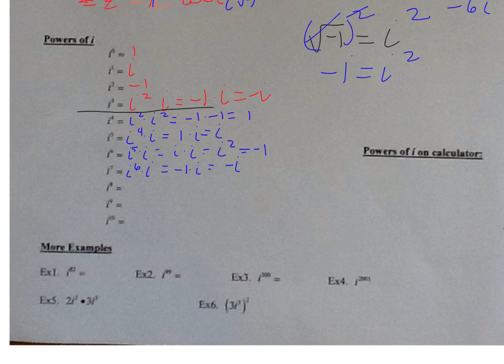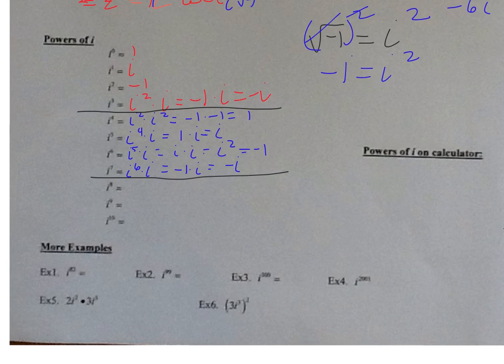Look at what we had: 1, i, negative 1, negative i — then 1, i, negative 1, negative i. So take a guess — what do you think i to the eighth is going to be? Yes, it's going to be 1. i to the ninth is going to be i. i to the tenth is going to be negative 1. And i to the eleventh is going to be negative i. So it goes around in a cycle of 4.